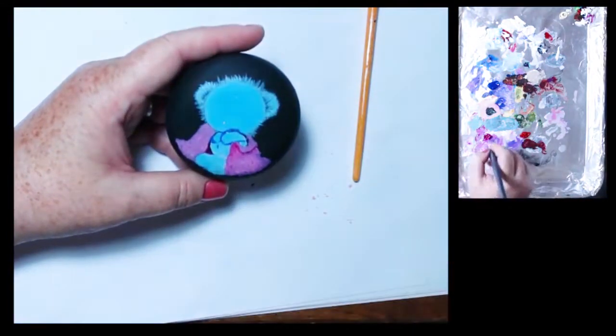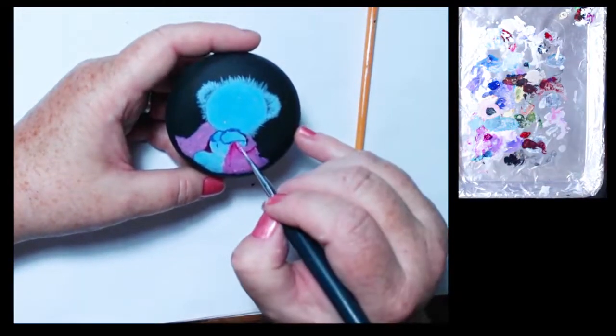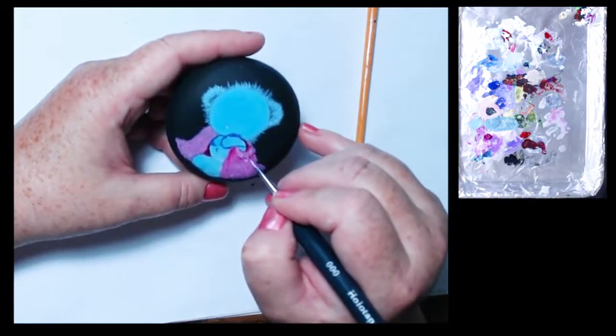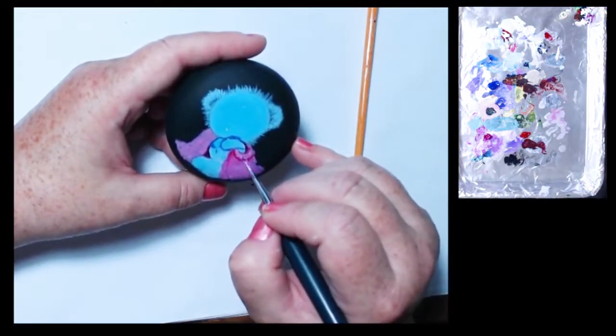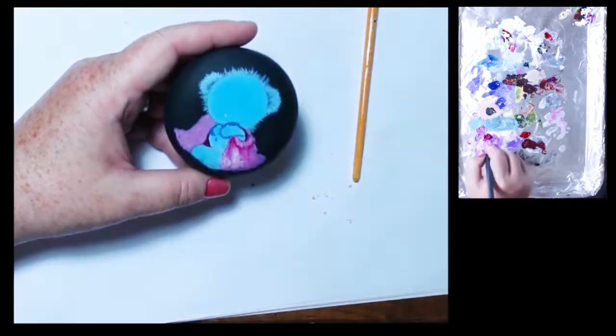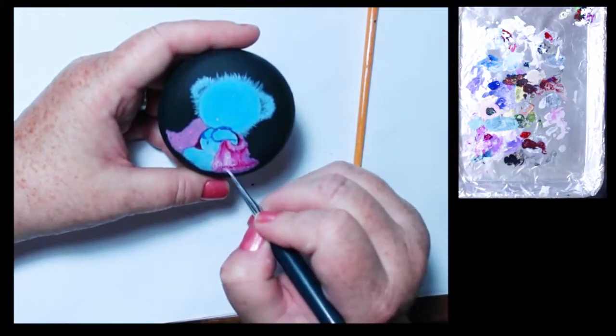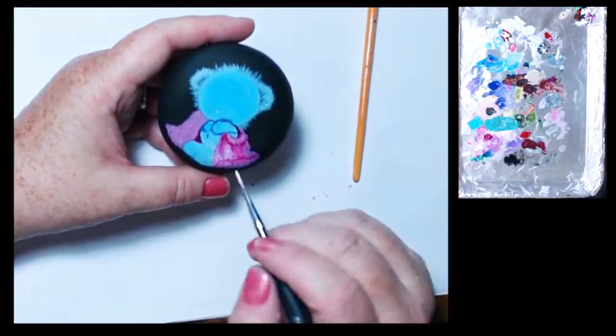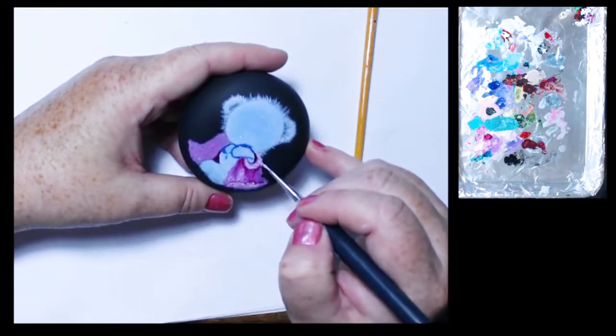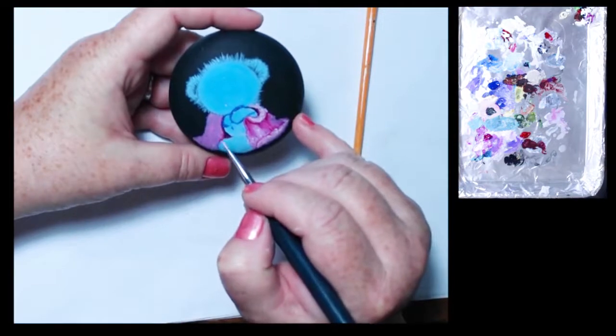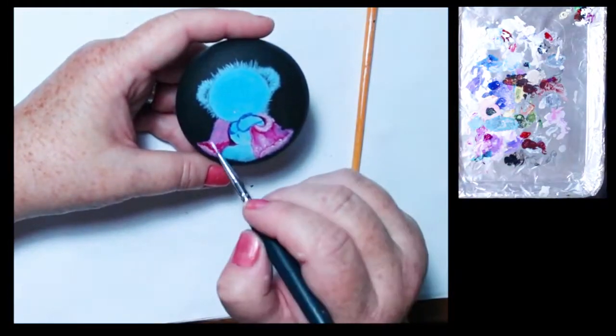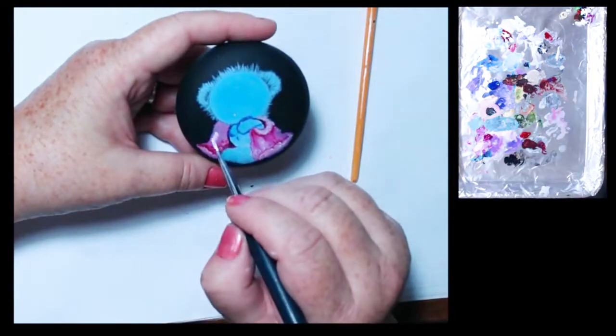Now I'm shading in the shadows, the shadowed areas and highlighting. This top section I want there to be a little fold here. And see I'm doing a lot of like stippling and that's what's adding the texture to the bear and the blanket. It's kind of a stippling motion that I'm using because I don't want it to look smooth, I want it to have some texture to it.